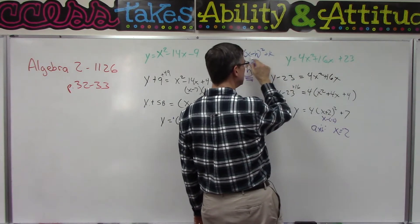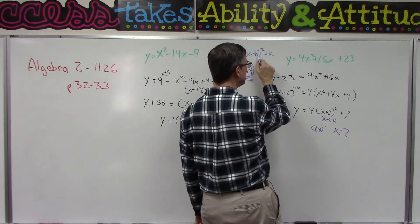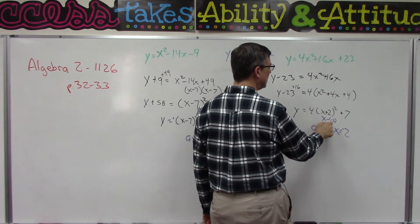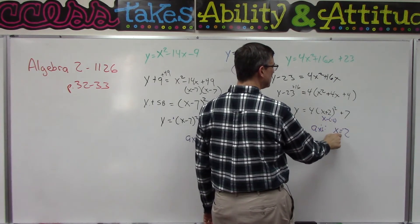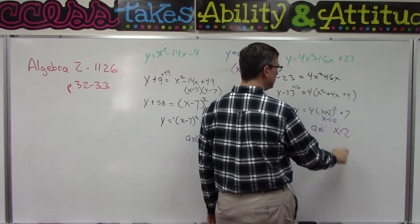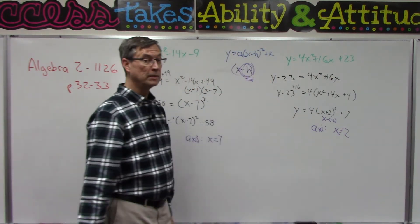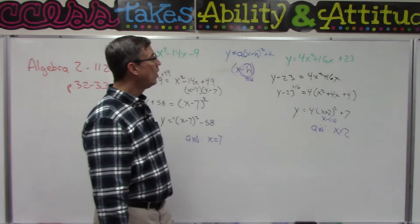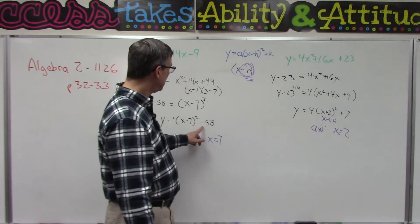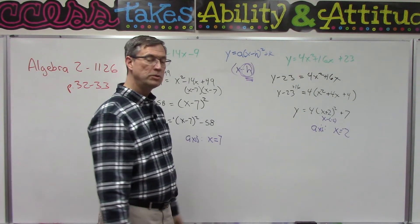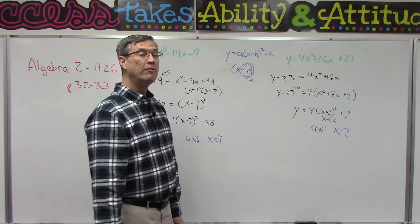So in this equation X minus H, the H has to follow the negative sign, so in this case X equals negative 2. That's the axis of symmetry. Now on that axis, this number, the K value, gives you the vertex.